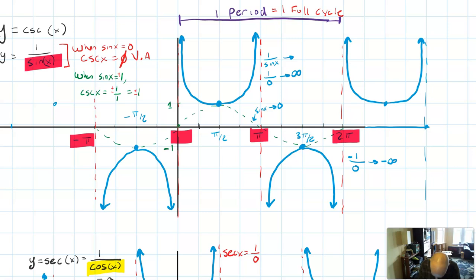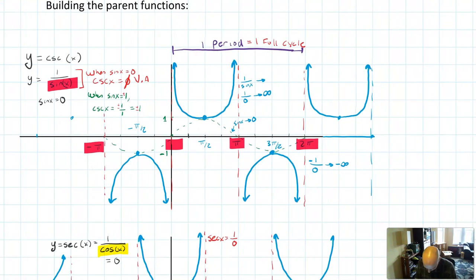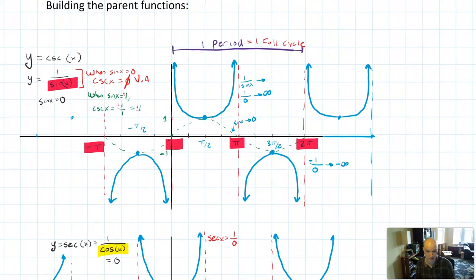Why? Because those are the values where sine x equals zero. And so if you're ever stuck remembering where the asymptotes are, just remember which function is the reciprocal, and work from there to understand where the zeros are. Wherever the zeros of the reciprocal are, that's where your asymptotes will be.